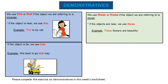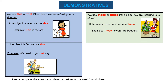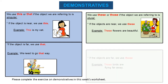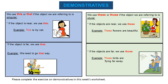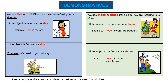We use these and those if the object we are referring to is plural. If the objects are near, we use these. For example: these flowers are beautiful. But if the objects are plural and they are far away, we use those. Example: those birds are flying far away.